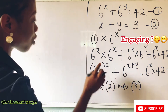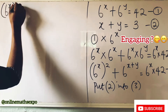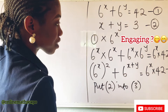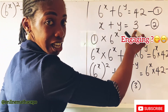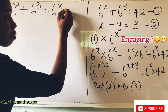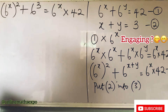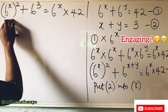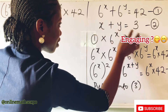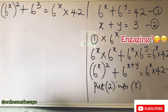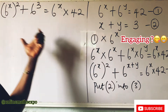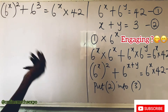This gives us: 6 to the power of x, all raised to power 2, plus 6 to the power of x plus y — where x plus y from equation 2 is 3 — so it becomes 6 to the power of 3, which is 216. This equals 6 to the power of x multiplied by 42. This is now an exponential equation we can solve.